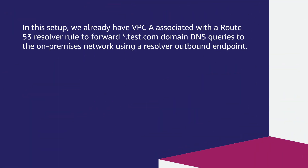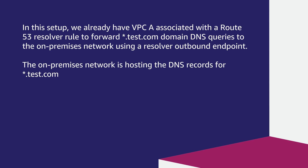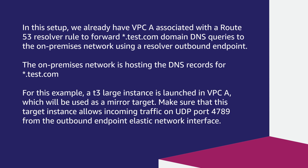In this setup, we already have a VPCA associated with the Route 53 Resolver rule to forward test.com DNS queries to the on-premises network using a Resolver outbound endpoint. The on-premises network is hosting DNS records for test.com. For this example, a T3 large instance is launched in VPCA, which will be used as a mirror target.